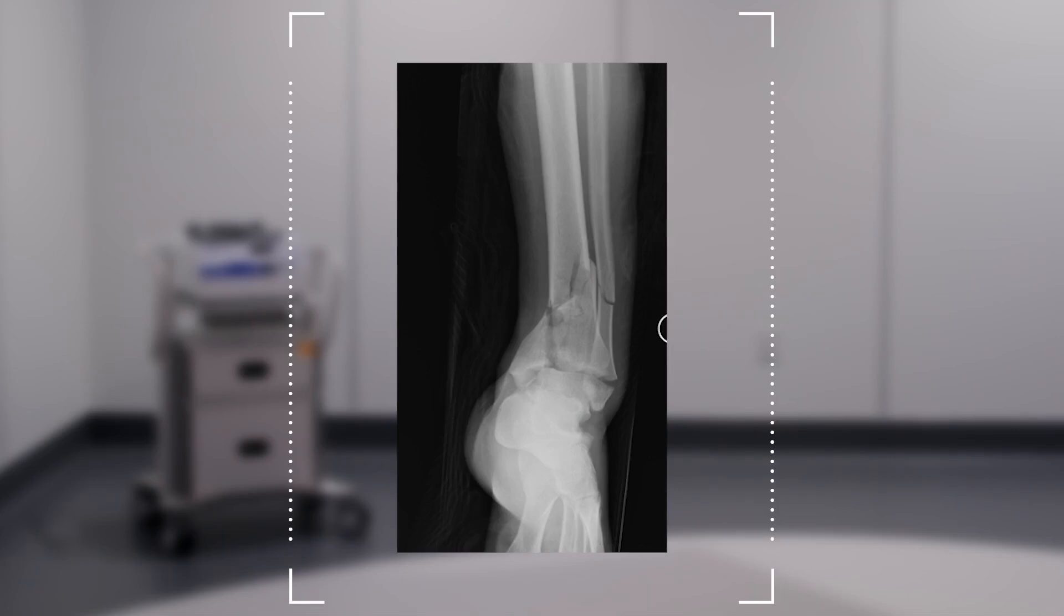Now, this is another example of a high-energy distal tibia injury where the talus is impacted and exploded the distal tibia. In this case, this is a 42-year-old male in a high-speed MVC.